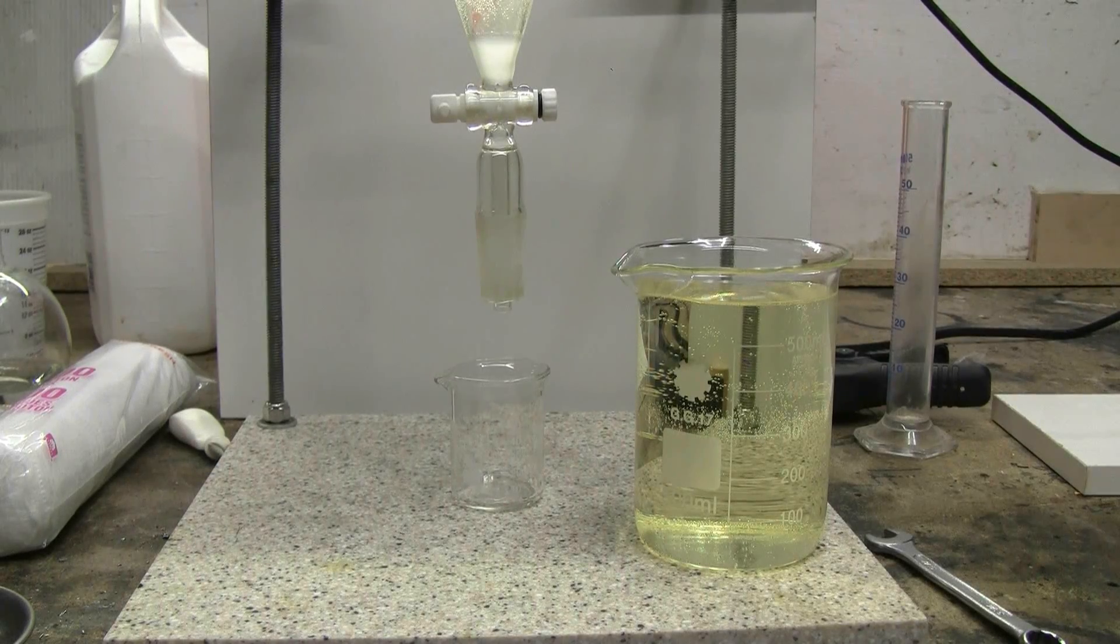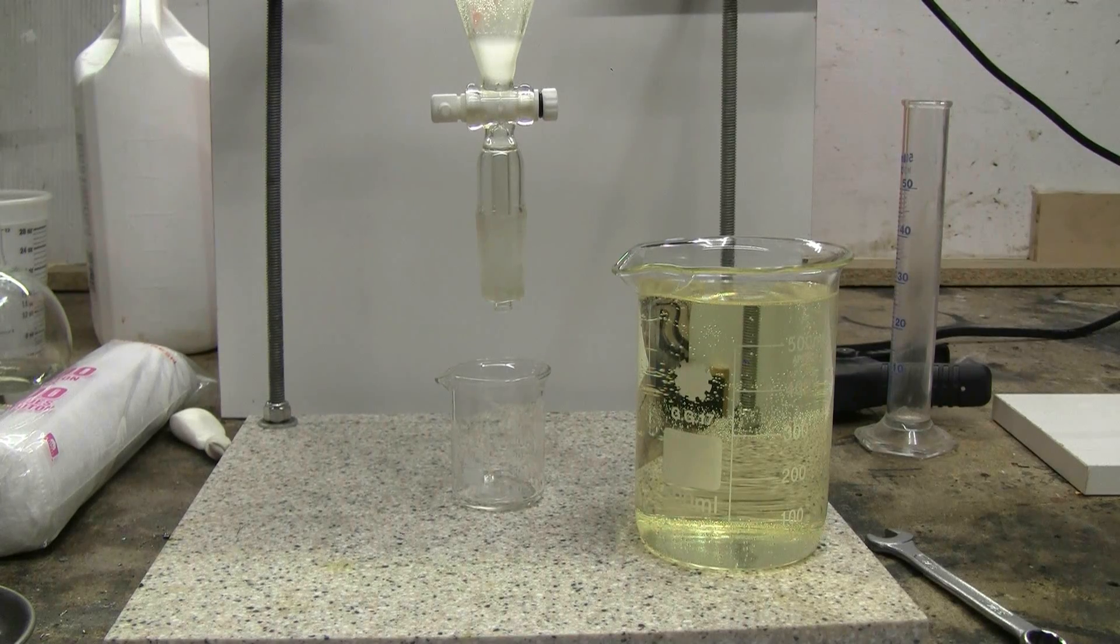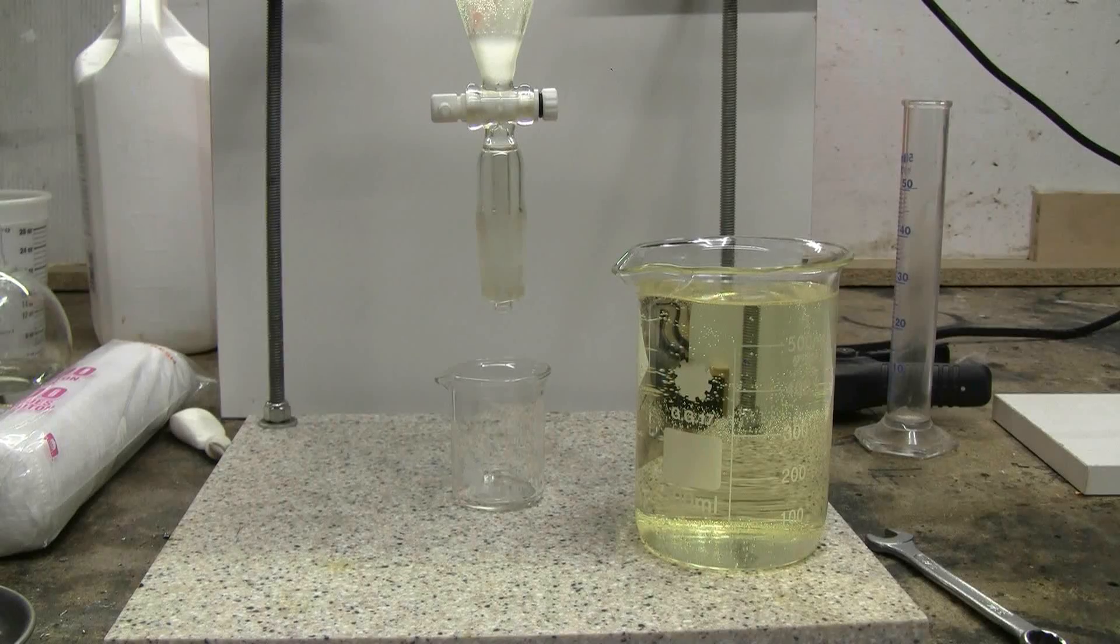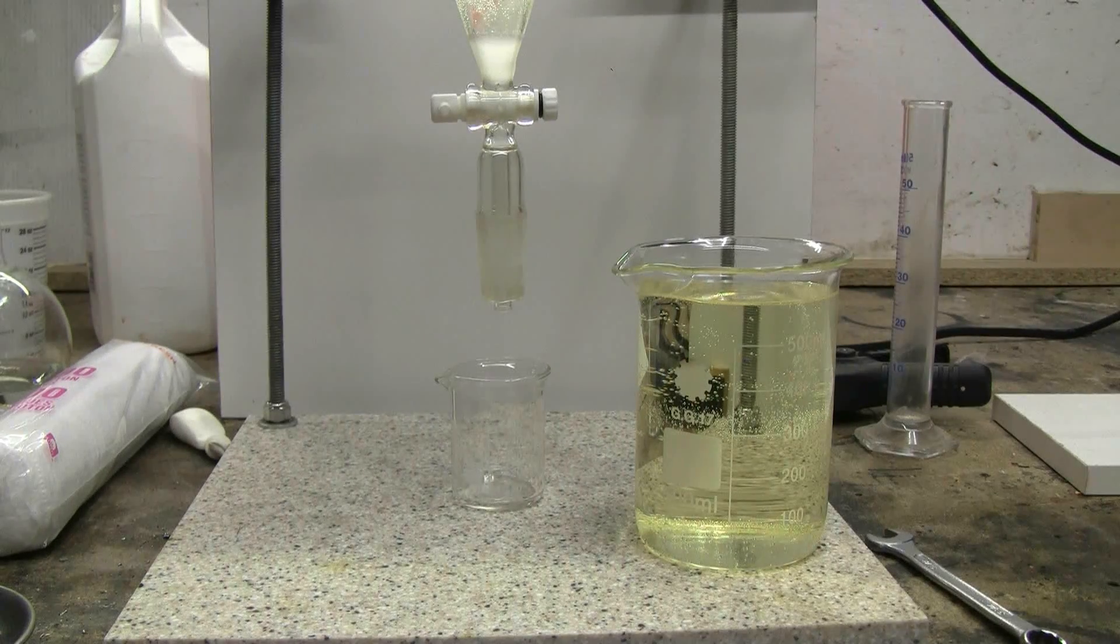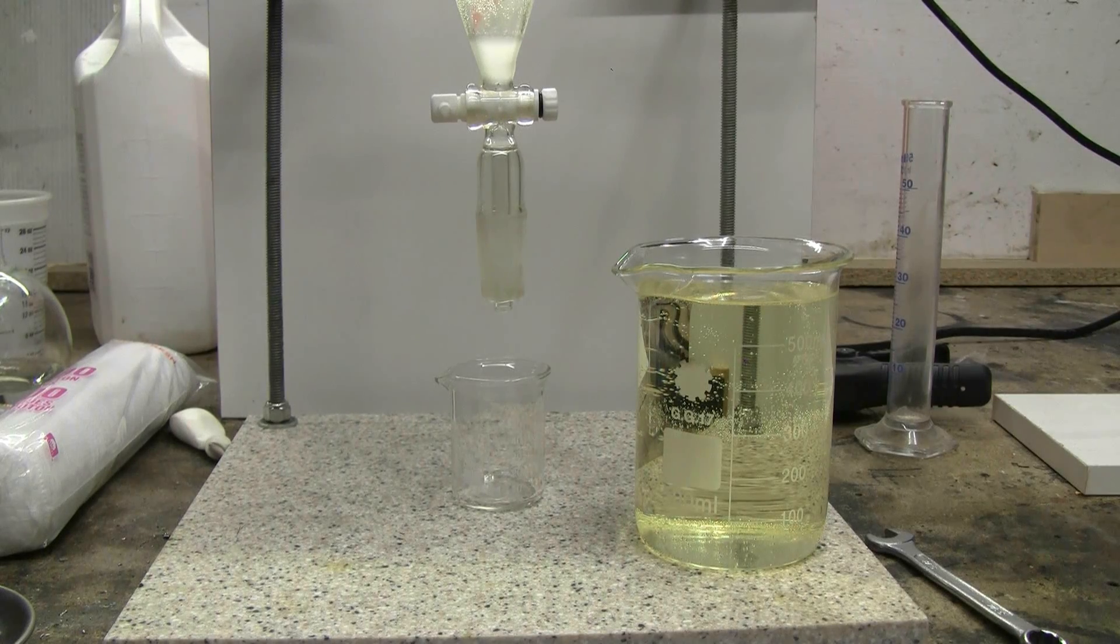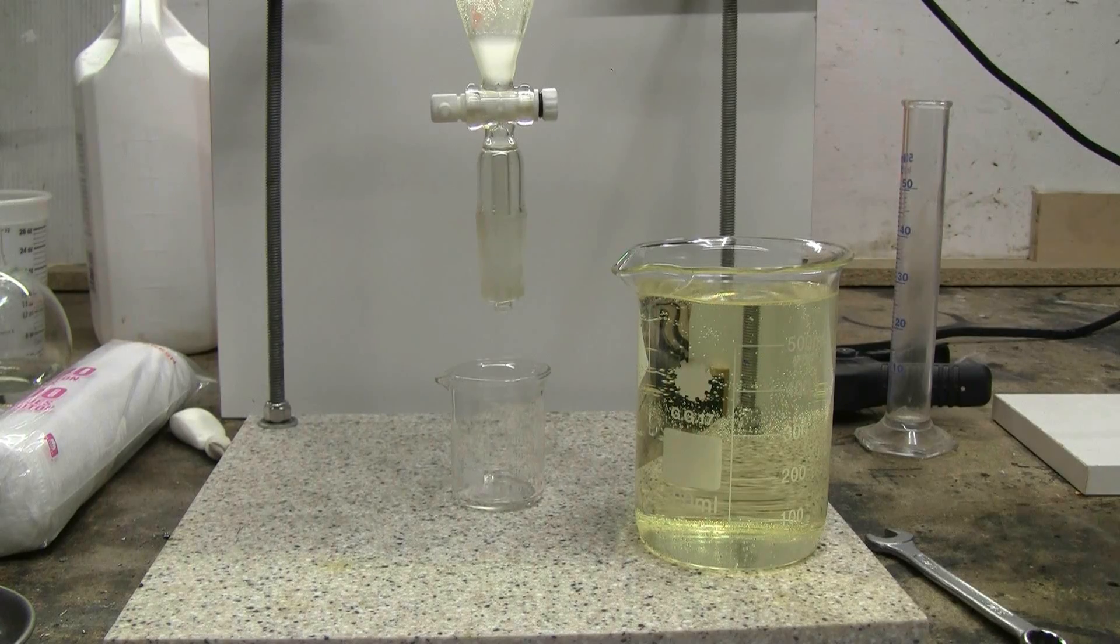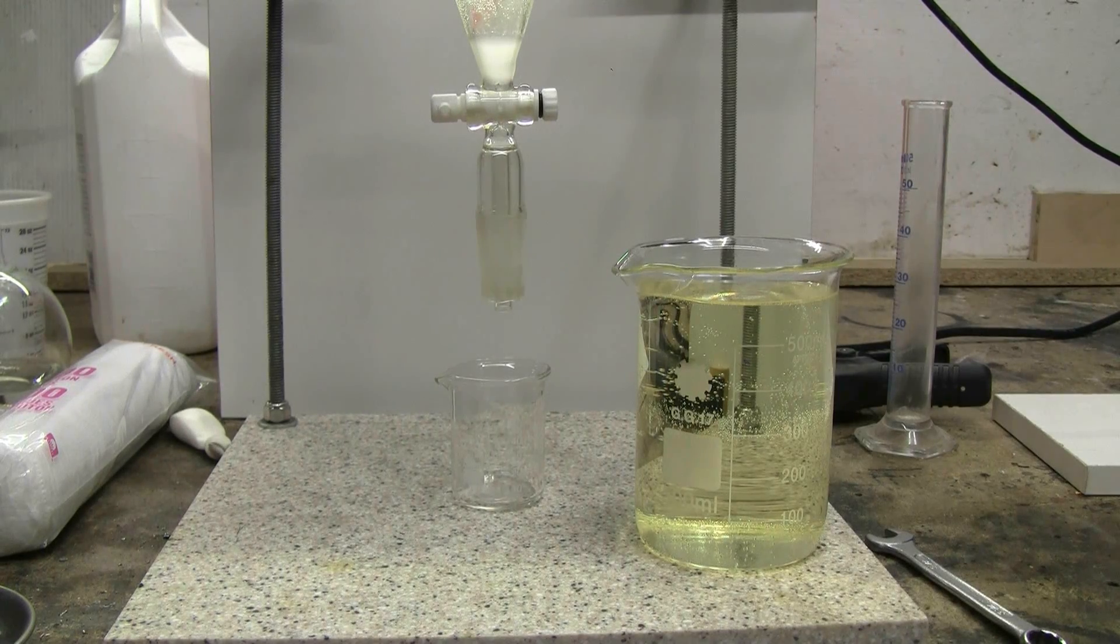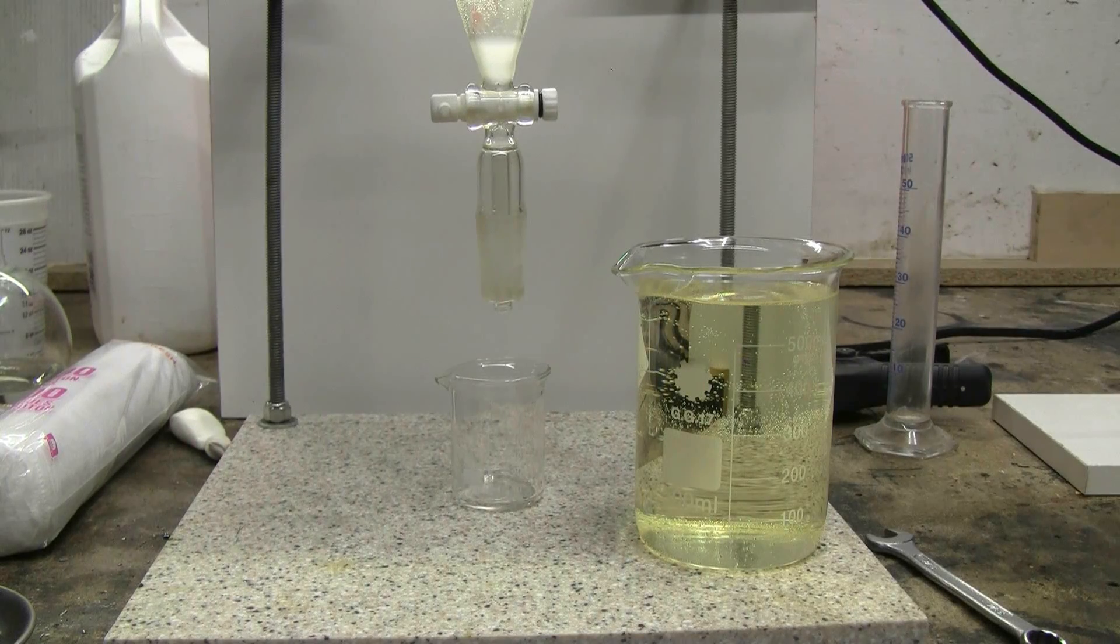What I've done at this point is take both 500 milliliter beakers that I did the haloform reaction in to make chloroform. I poured the dominant top layer which is like 95% of what you get out of the two beakers and you can see this waste layer almost filling the beaker on the right.